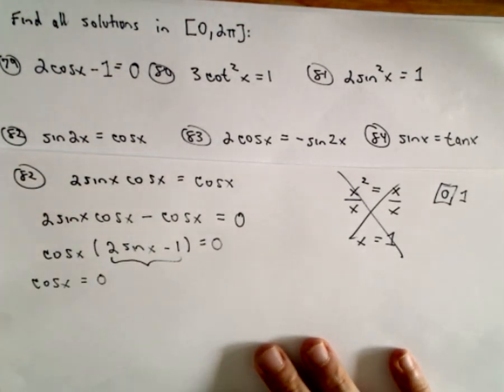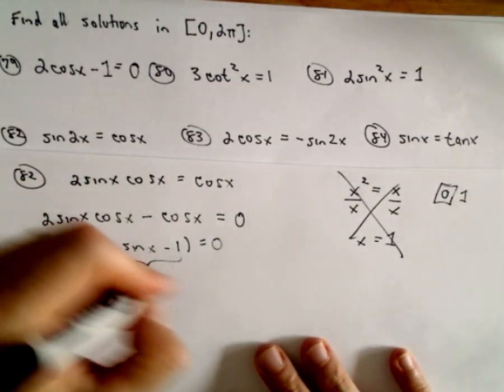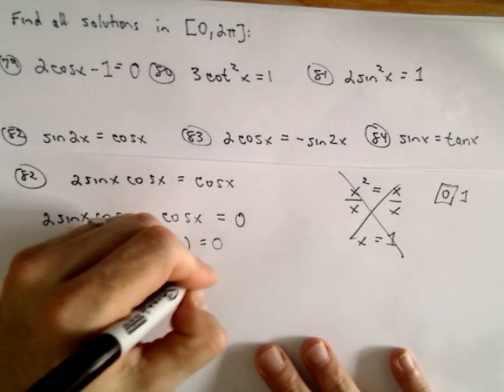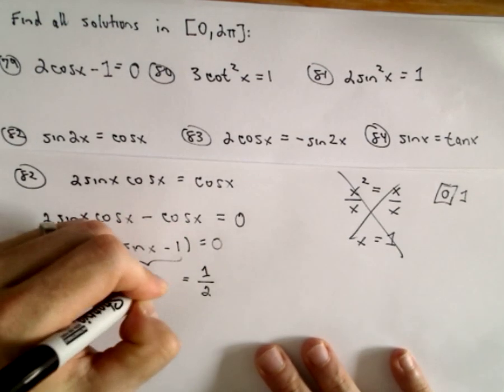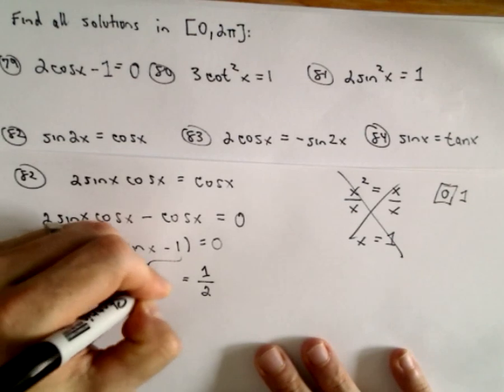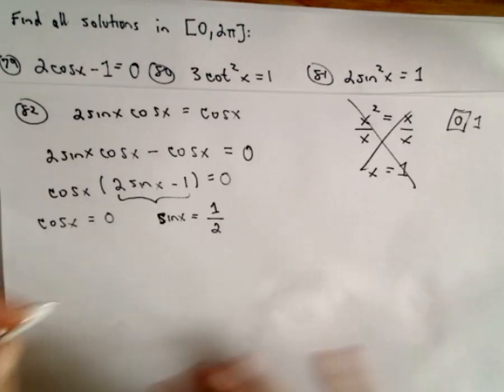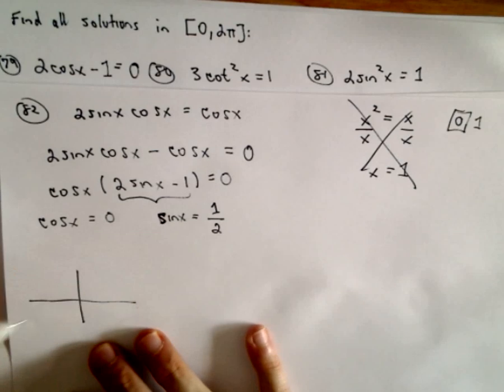And from the second factor, this 2 sine x minus 1, we would set that equal to 0. Well, we would add 1 to both sides, divide by 2, and we would get that sine x has to equal 1/2. Okay, so again, in terms of the unit circle.